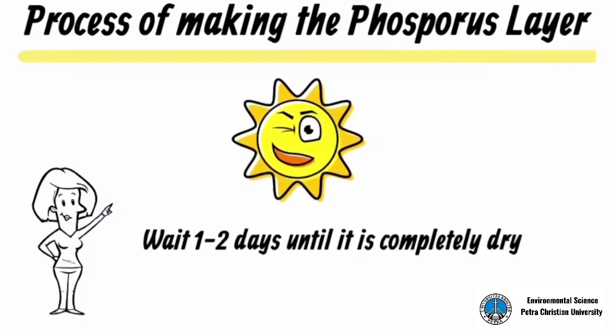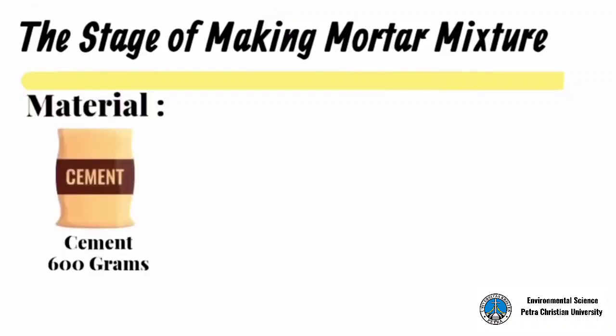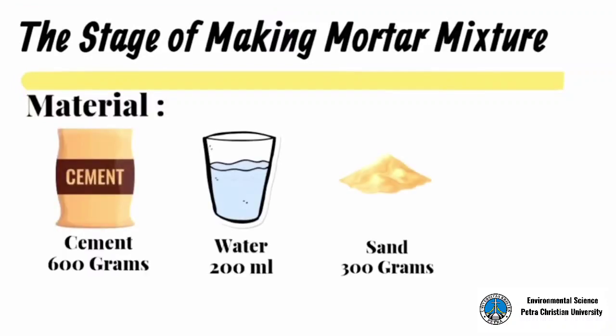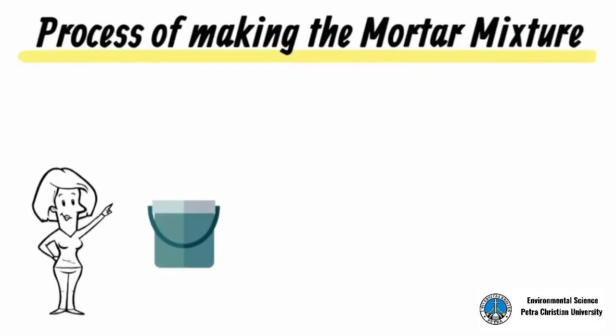The stage of making mortar mixture: the materials that we need in this stage are 600 grams cement, 200 milliliters water, 300 grams sand, and three drops of super plasticizer. Process of making the mortar mixture: first, mix the cement with sifted sand. The ratio of cement to sand is 1 to 2.